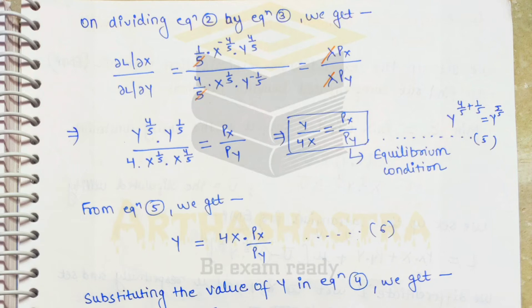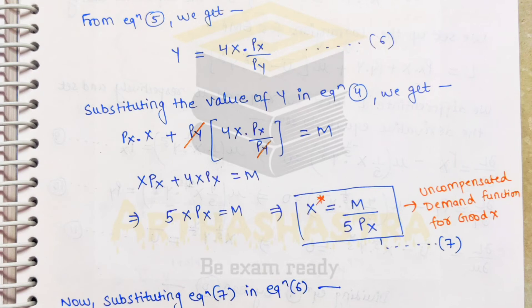Rearranging the equilibrium condition and solving for good y, we get y = 4x·px / py. We now substitute this value of y into equation number 4 to find the uncompensated demand function for good x. Substituting y in equation 4: px·x + py × (4x·px/py) = m. The py terms cancel, leaving x·px + 4x·px = m, so 5x·px = m. Therefore the uncompensated demand function for good x is x* = m / (5·px).